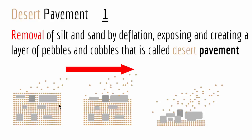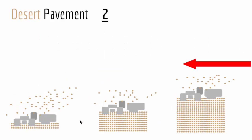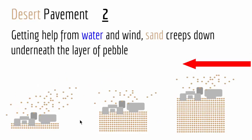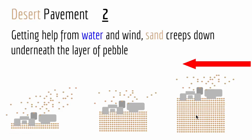However, this explanation does not account for all desert pavements that exist in the world. There is another explanation: when you have water that carries sand and silt, this water creeps down the pebbles and the big and small rocks and goes underneath. So in the first picture you have big and small rocks and pebbles, and underneath you have sand. By the help of water, the sand mixes with the water, trickles down underneath, and you end up with all the pavement above and a layer of sand underneath.